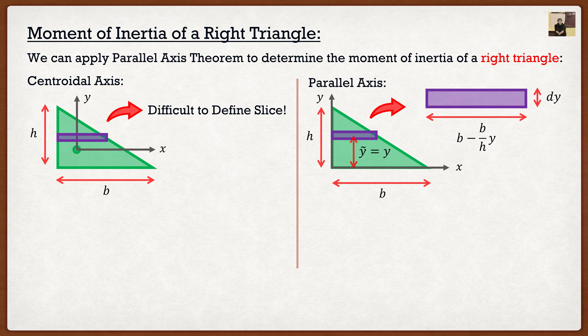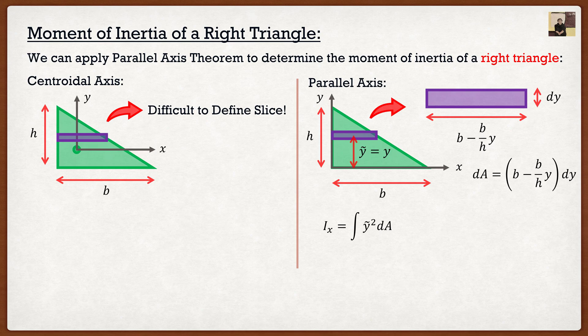Triangles are just linear lines, so that expression comes from taking y = mx + b and rearranging for x. Now that I know both the base and height of this slice, I can find dA as base times height, and substitute into the moment of inertia formula — the integral of y-tilde squared dA. I know what dA and y-tilde are, so substituting everything in gives base times height cubed divided by 12, which is actually the same form as a rectangle for this particular case.